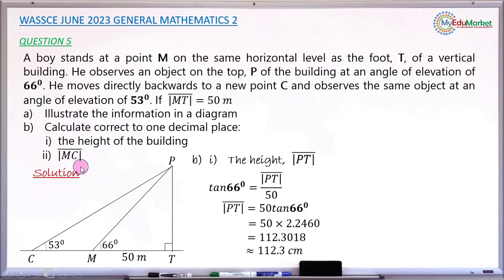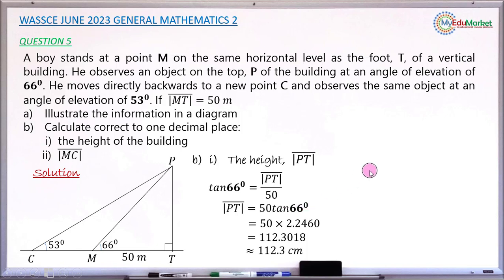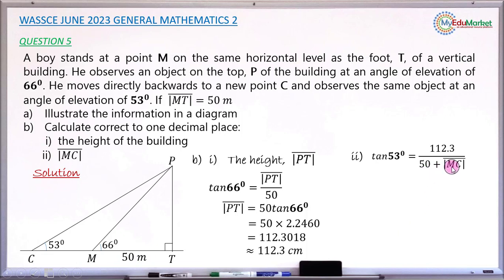Moving to Roman numeral (ii), we need to find the distance MC — the distance the boy moved backward. To answer this, we use the larger right-angle triangle. In this triangle, the side PT is opposite to the angle of 53 degrees, and the full base from C to T — which is 50 plus MC — is adjacent to the angle of 53 degrees. So it is again a tangent ratio: tan(53°) = 112.3 divided by (50 + MC).